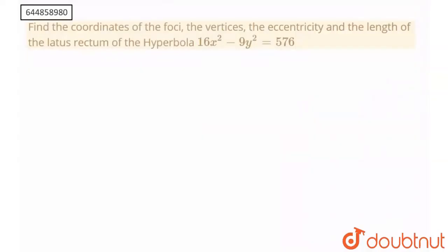The question says to find the coordinates of the foci, the vertices, the eccentricity and the length of the latus rectum of the hyperbola 16x squared minus 9y squared is equal to 576.